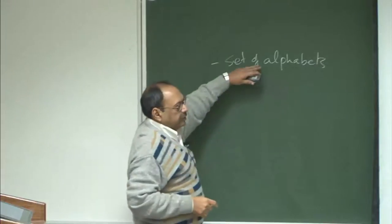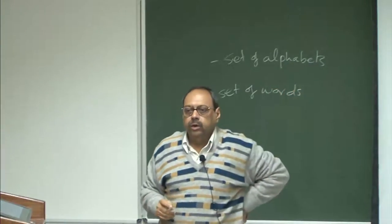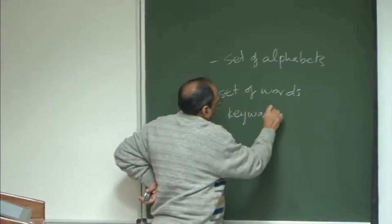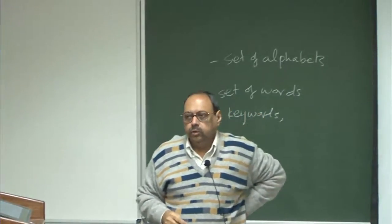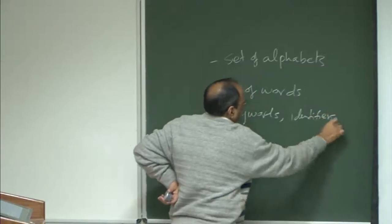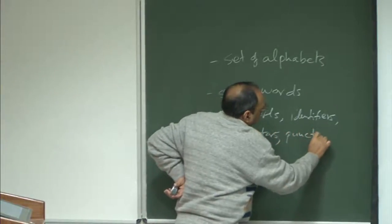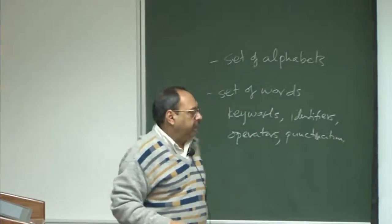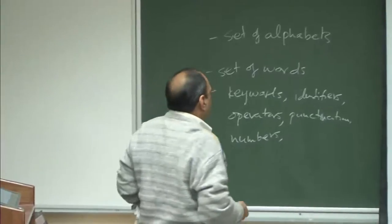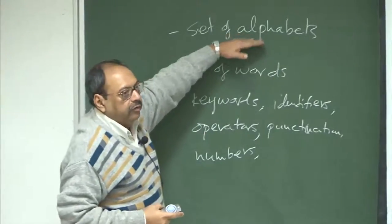Once I have defined a set of alphabets, I look at the set of words. What are the words in a typical programming language? This could be keywords, and apart from keywords there are identifiers, operators, all the so-called punctuation such as the equals sign, and numbers. Numbers will come in various representations. So I am going to have all these sets of words, and I must also know how to break my sequence of alphabets into a sequence of words.